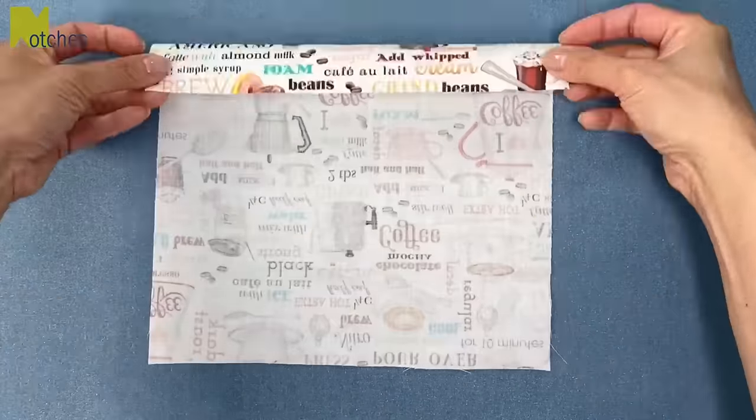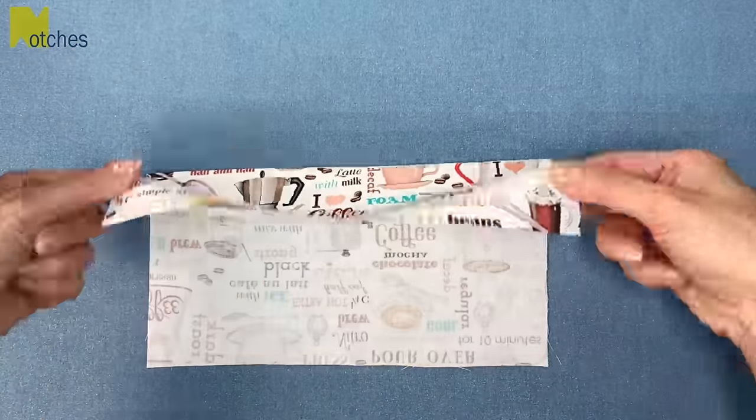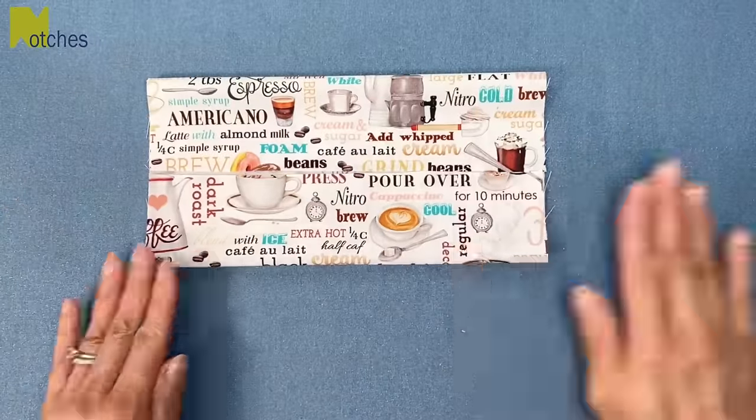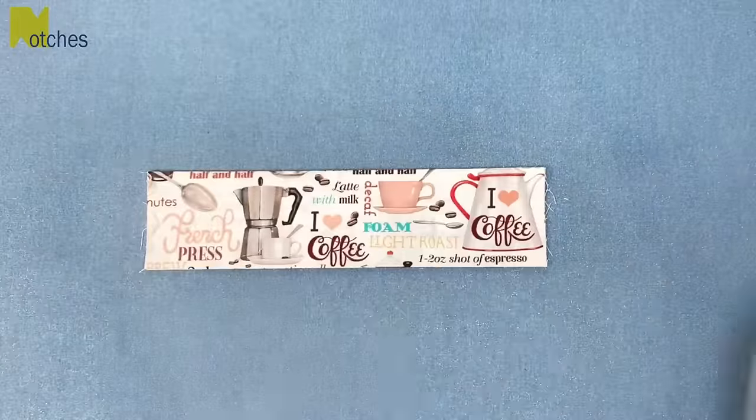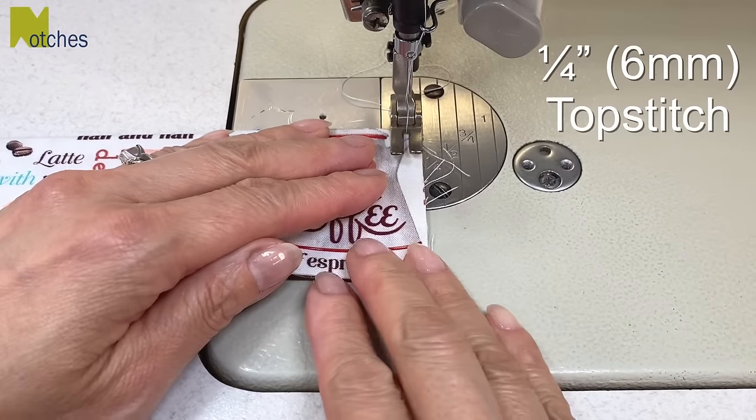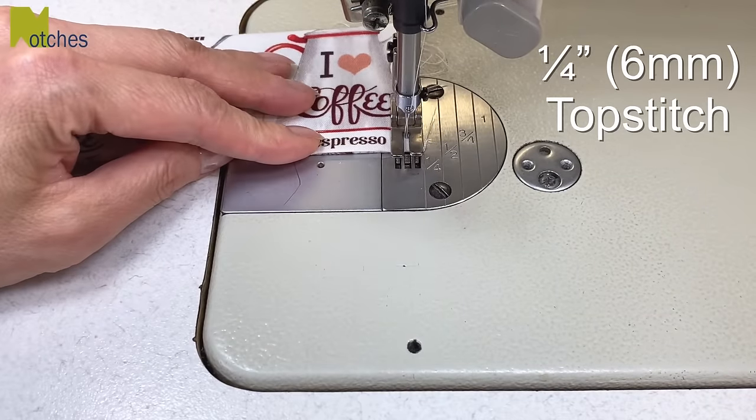Flip your fabric over to the wrong side, fold and crease like we did with the pattern, giving it a press with your iron and also making sure the folded edges line up. Next, do a quarter inch top stitch all around without any back tacking.